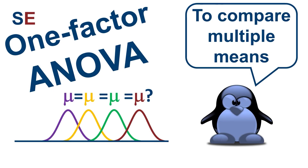The One-Factor ANOVA is the most common technique to see if the means of more than two populations are different from each other. In this video, we'll look at the concepts behind it and how it works. There's also a companion video on this channel that works through two step-by-step examples.